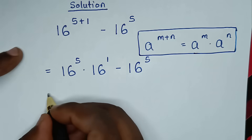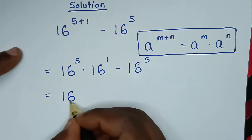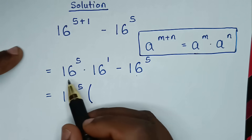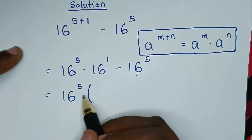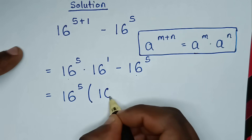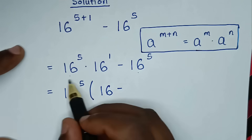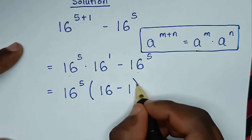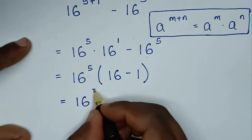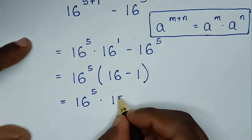Then in the next step, 16 power of 5 is common, so we take 16 power of 5 out of the bracket. 16 power of 5 times 16 power of 1 divided by 16 power of 5 gives 16 power of 1, which is 16. Then minus 16 power of 5 divided by 16 power of 5 gives 1. Then it will be equal to 16 power of 5 times 16 minus 1, which is 15.